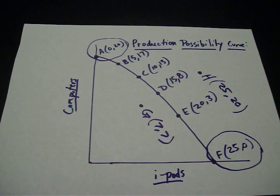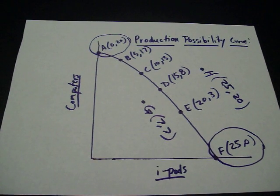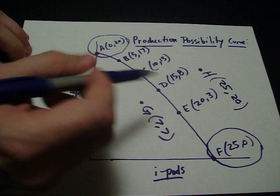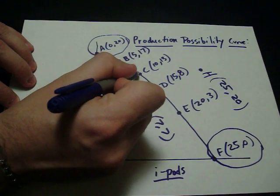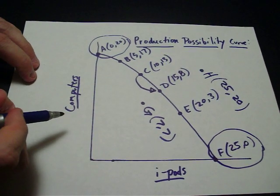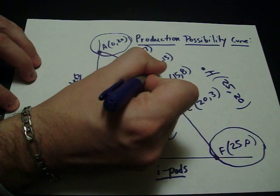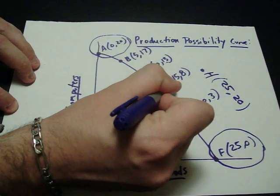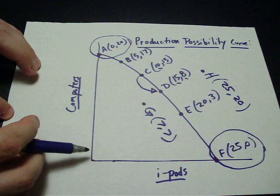Let's look at one other thing that they might ask you on the AP test which is opportunity cost. They might ask you a question like what's the opportunity cost if we go from point C to point D? Well opportunity cost is what you give up. So here they were making a combination of 10 iPods, 13 computers. Here at point D they're making more iPods but they're making fewer computers.